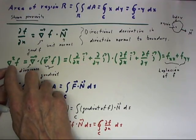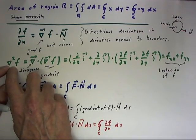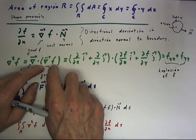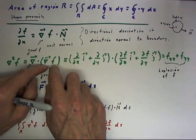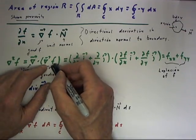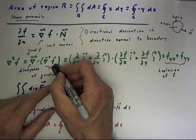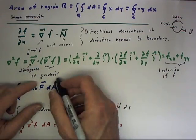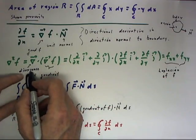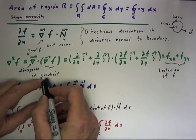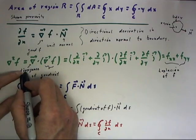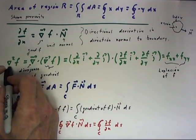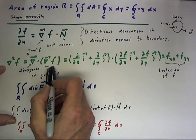Let's also define del squared f to mean simply the divergence of del f. We apply the del operator to f, getting a vector field, and then apply del to that result to get a scalar again. It's the divergence of the gradient. The gradient of f is a vector field; the divergence is a scalar — a number. So del squared f is just the divergence of the gradient.